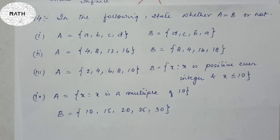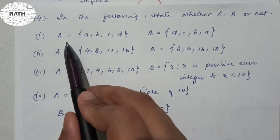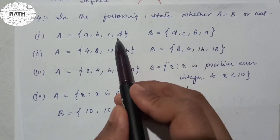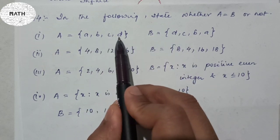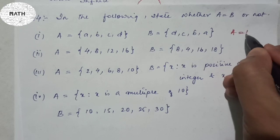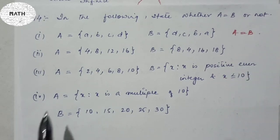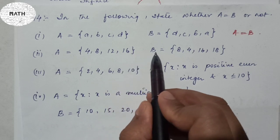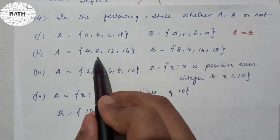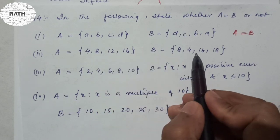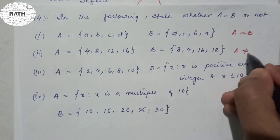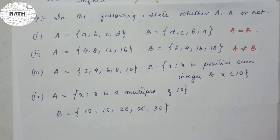Question four of exercise 1.2: state whether A equals B or not. Number one: A = {a, b, c, d}, B = {d, c, a, b} — four elements each, same elements, so A = B. Number two: A = {4, 8, 12, 16}, B = {8, 4, 16, 18} — A has 12 but B does not, so A ≠ B.